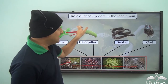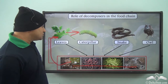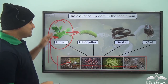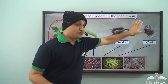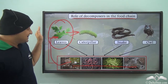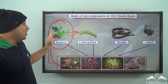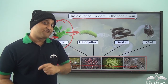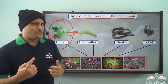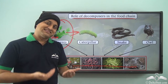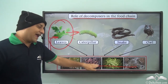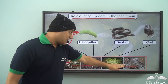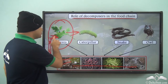Decomposers complete a circle — the entire energy of the food chain goes back to the starting point, which is the plants. The role of decomposers in the food chain is very important because they allow a continuous flow of energy. Even when scavengers die, they are again broken down and mixed with soil just like other components of the food chain. So decomposers complete the circle and allow the continuous flow of energy.